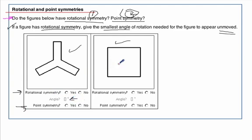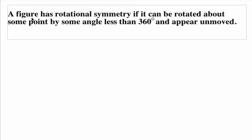So let's look closely at some definitions of rotational symmetry and point symmetry. First, understand rotational symmetry. The figure has rotational symmetry if it can be rotated about some point by some angle, less than 360 degrees, and appear unmoved.